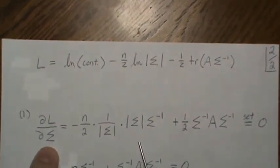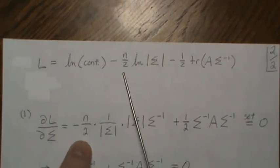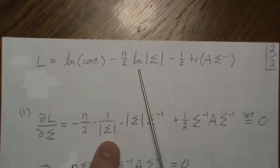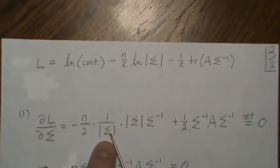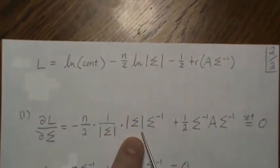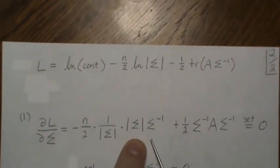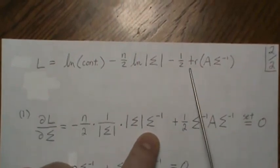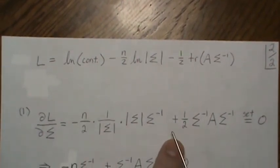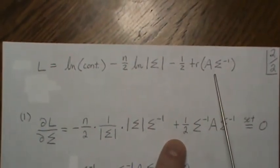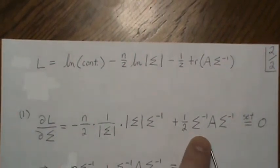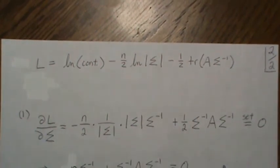So here, we take the derivative with respect to sigma, this is a constant, so it goes away. Here we get the minus n over two out front. And the derivative of a log of a number is one over that number times the derivative of this, which on the previous page we said was this, the derivative of sigma, sigma inverse. And here, it's actually the minus one half comes out front. But then the derivative of this trace ends up being a minus times, so that minus and minus become a plus. And then we're left with sigma inverse A sigma inverse.